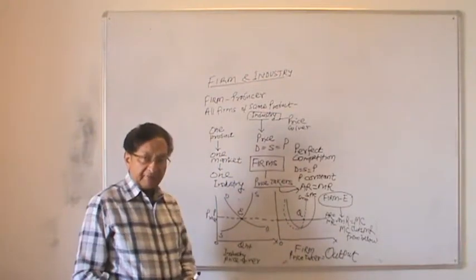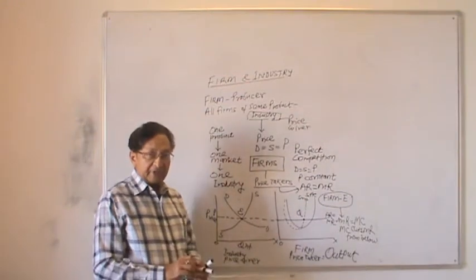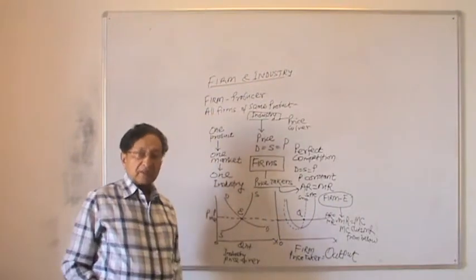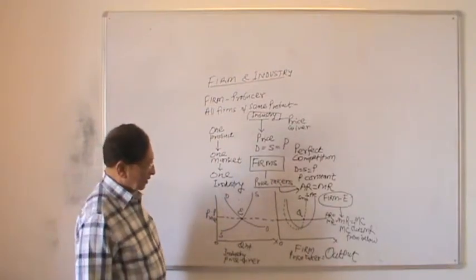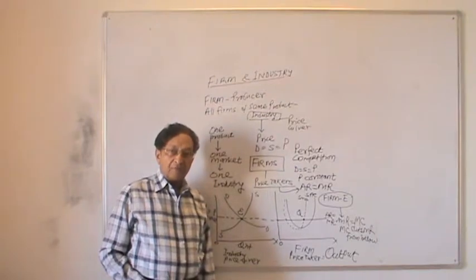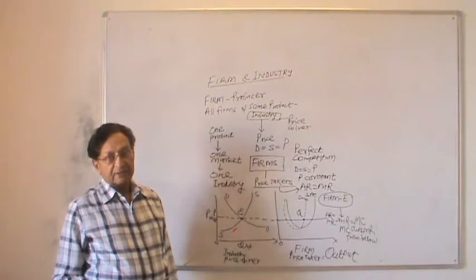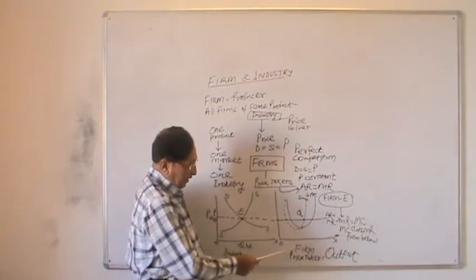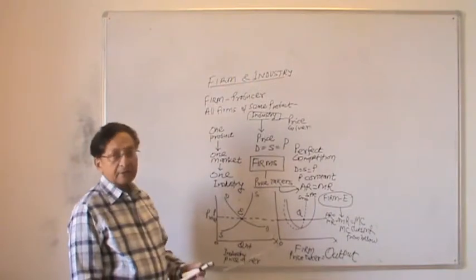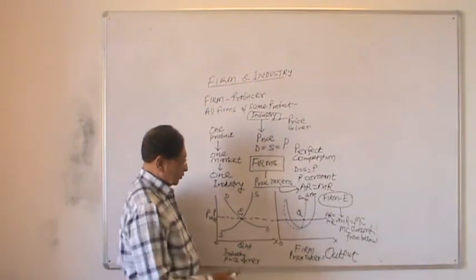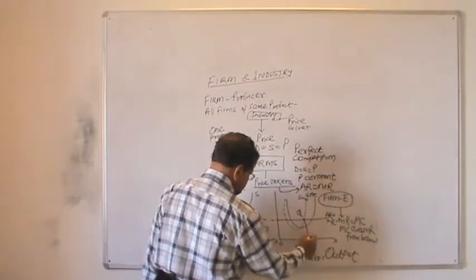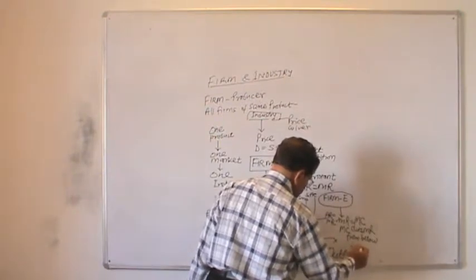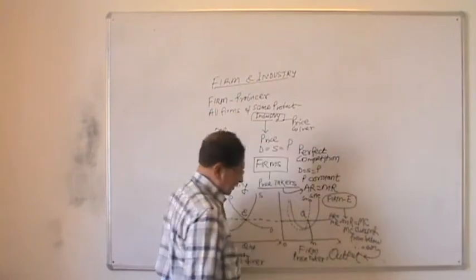Marginal cost is the cost of an individual unit, and marginal revenue is the revenue of that individual unit. That means a producer should stop production where revenue and cost of the individual unit are equal — in other words, marginal revenue is equal to marginal cost. Secondly, marginal cost should cut marginal revenue from below. Therefore Q is the equilibrium point, and OM output will be determined — OM will be the output of that firm.